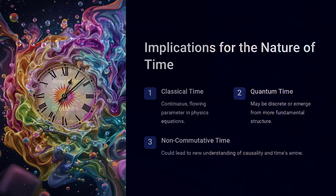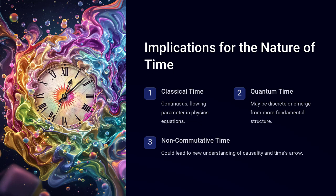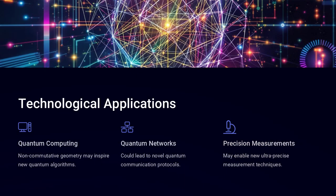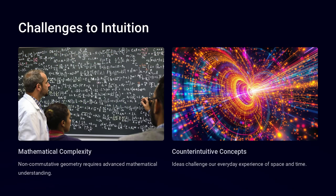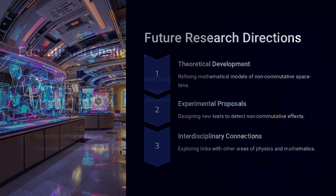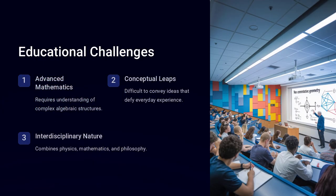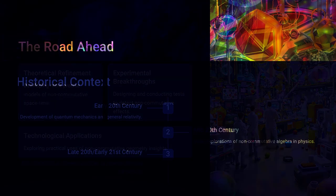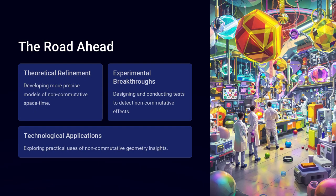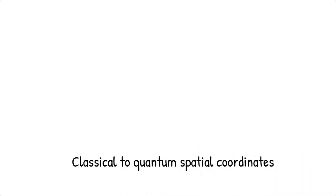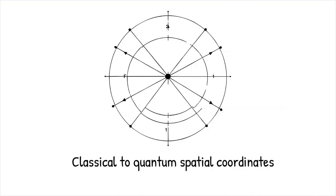If space itself follows quantum rules at the deepest levels, does it mean that reality as we perceive it is an approximation of a much stranger, more fundamental structure? Could non-commutative geometry hold the key to unifying gravity and quantum mechanics? As physicists continue to explore this paradox, we may uncover answers that revolutionize our understanding of space, time, and the very fabric of existence.